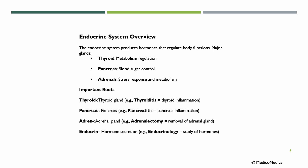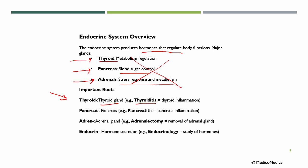Let's move on to the endocrine system. The endocrine system produces hormones that regulate body functions. The major glands include the thyroid, where metabolism is regulated; the pancreas, where we have blood sugar control; and the adrenals, for stress response and metabolism. Important roots: 'thyroid' is the thyroid gland — inflammation gives us thyroiditis. 'Pancrea' means pancreas — inflammation gives pancreatitis. 'Adrene' means adrenal glands — adrenalectomy means removal of the adrenal gland. 'Endocrine' refers to hormone secretion — adding '-logy' gives us endocrinology, the study of hormones.